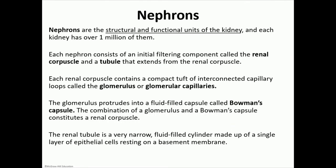The nephron is the structural and functional unit of the kidney. A healthy kidney needs millions of nephrons. The nephron is made out of a renal corpuscle attached to a series of tubules. In the renal corpuscle, urine formation begins through filtration. As the filtrate passes through these tubules, we change its composition until we reach the collecting ducts and the minor calyx, where composition no longer changes.